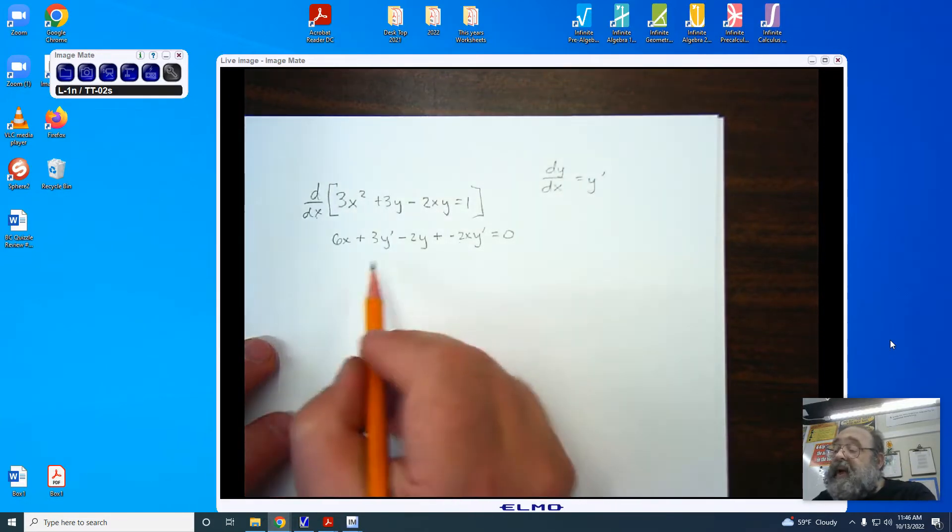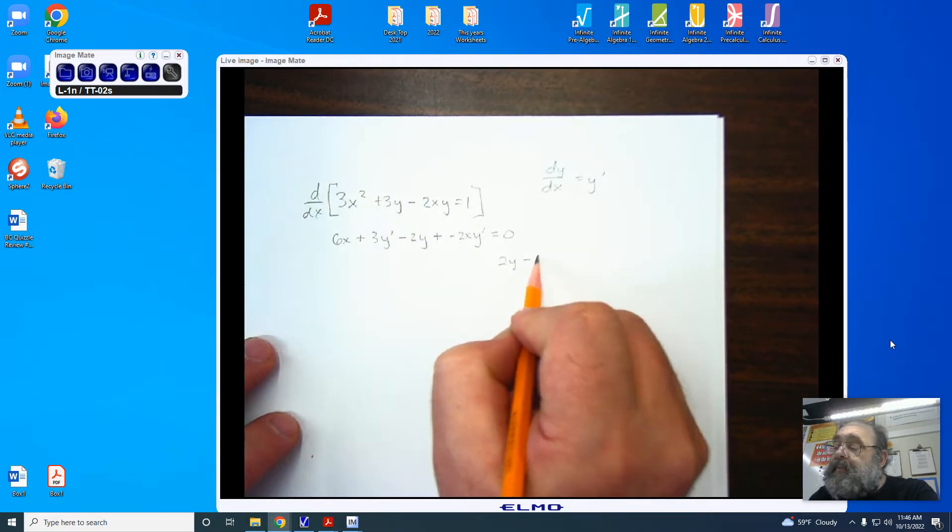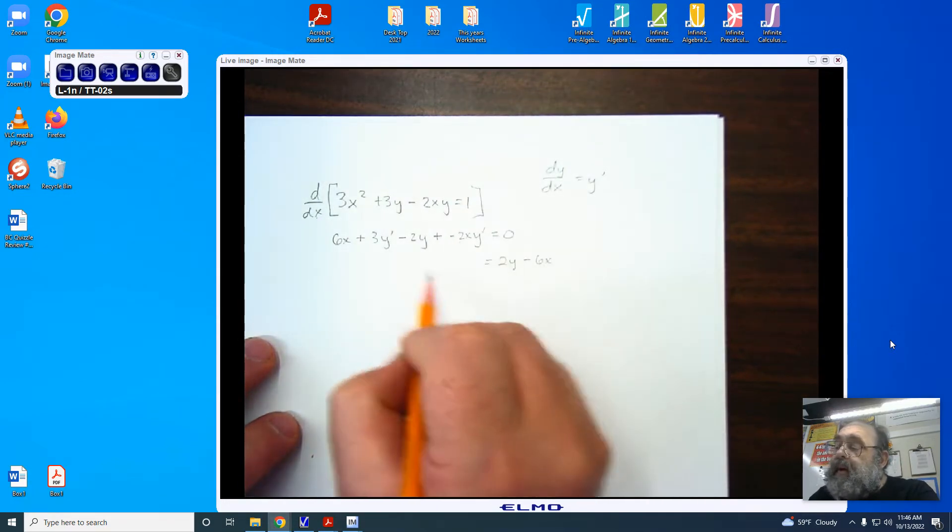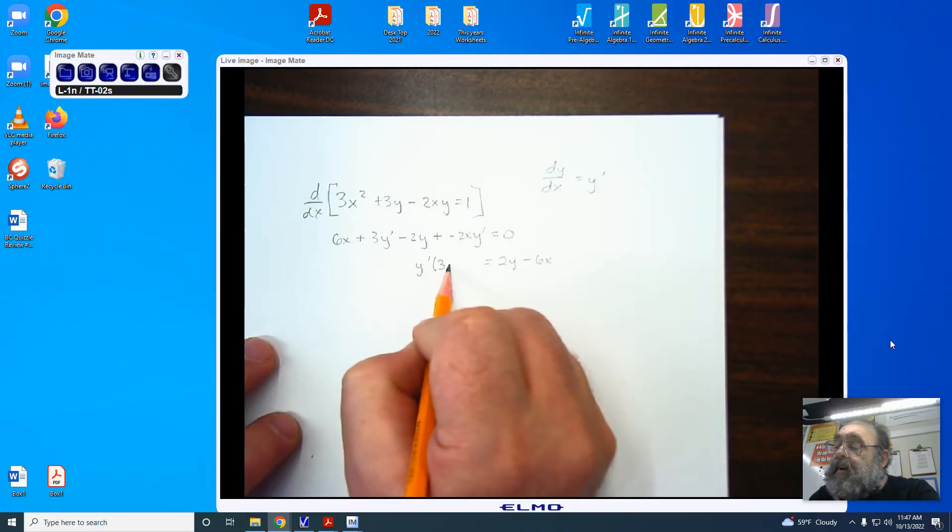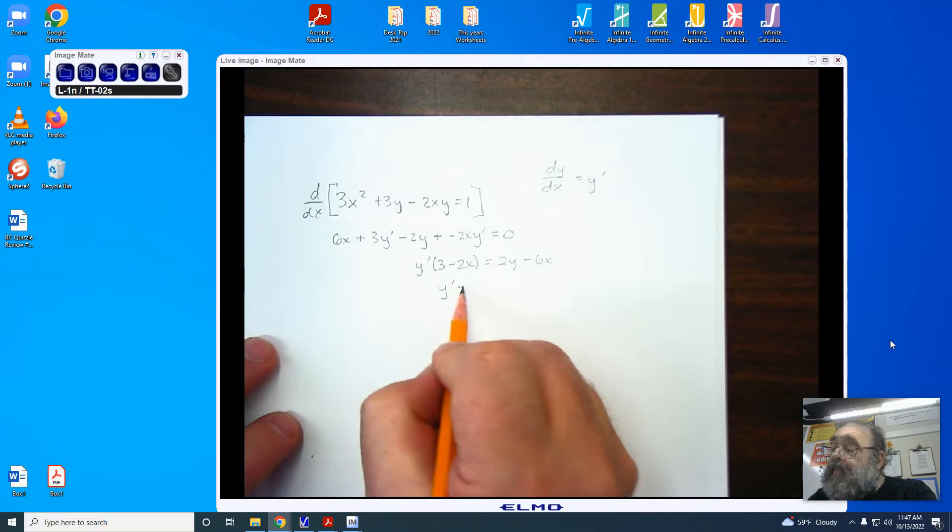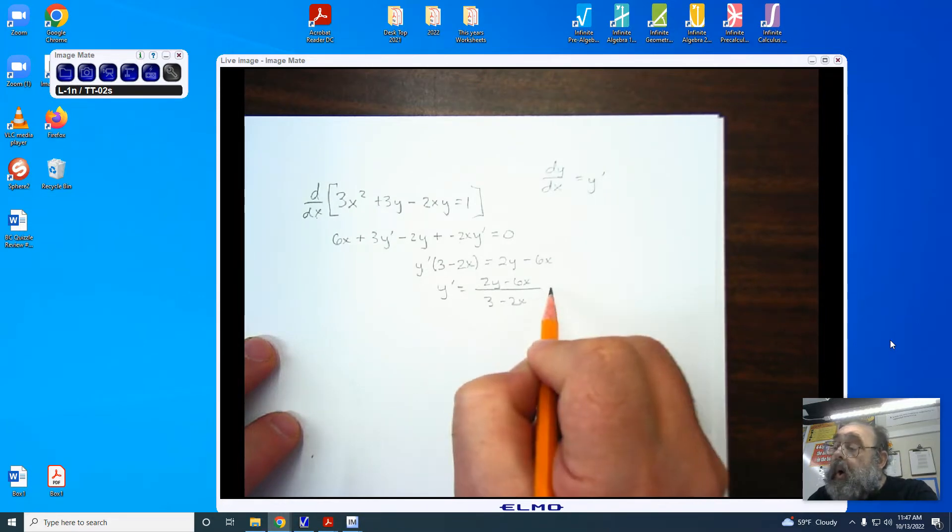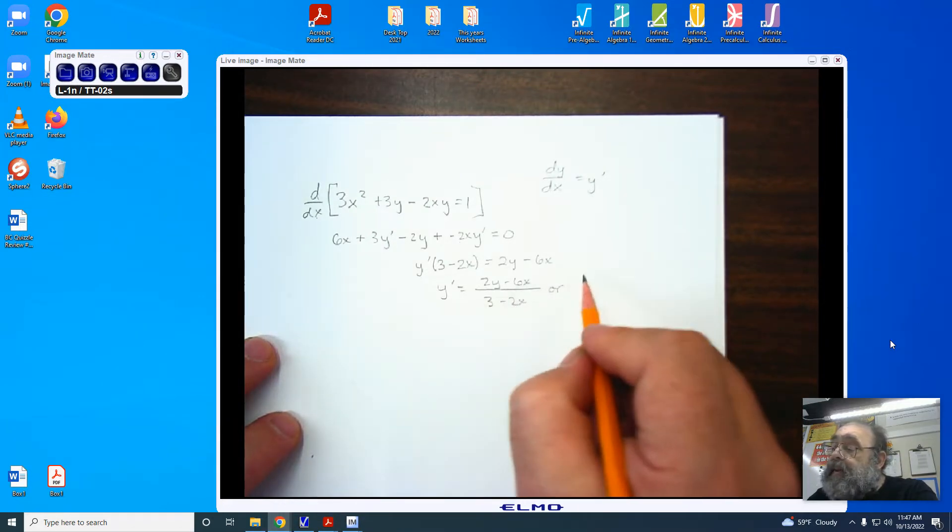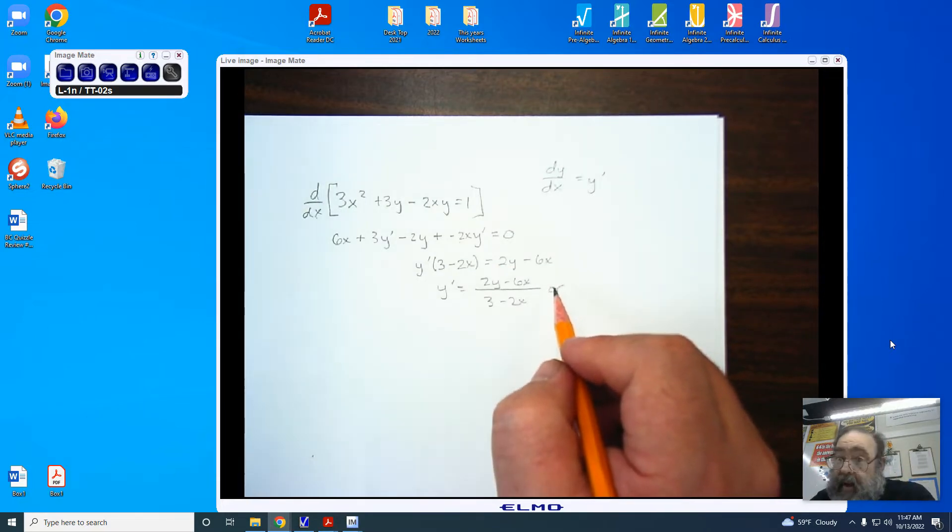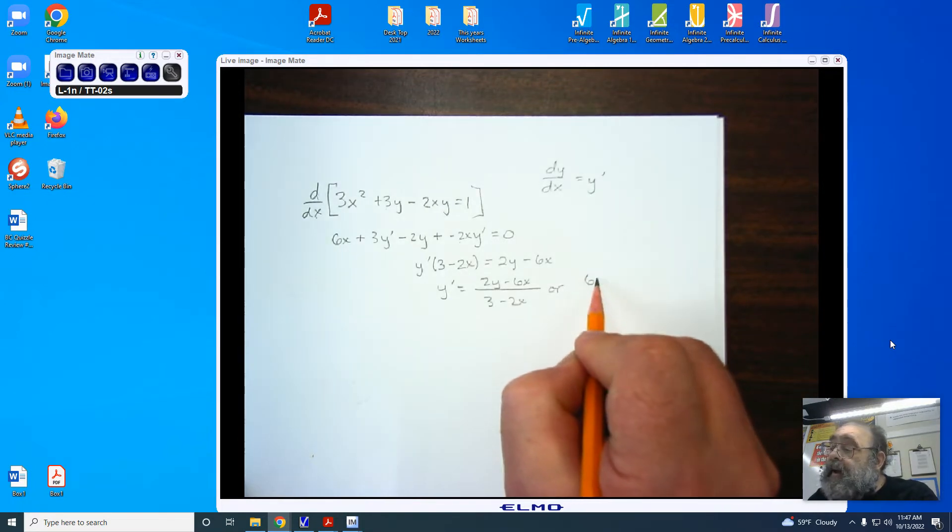Our goal is to gather our y primes together. I'm going to have to move my 2y over, and I'm going to subtract 6x, and I'm left with my y prime able to be factored out from 3 minus 2x. I'm now going to divide, y prime has to be equal to 2y minus 6x over 3 minus 2x. Or I can factor out a negative from the top and the bottom and end up flipping the terms.